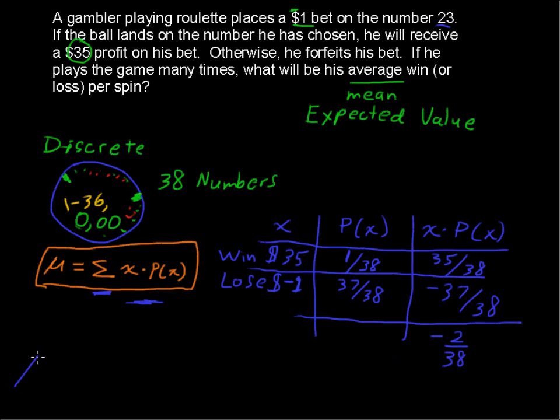So the mean, I'm going to move it over here, the mean is approximately equal to, if I take this fraction and turn it into a decimal, that's a negative number, negative 0.053.